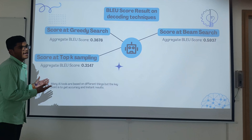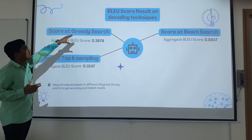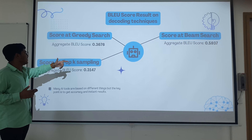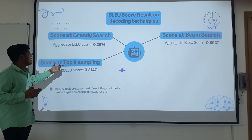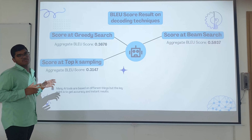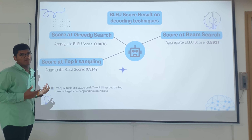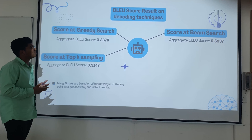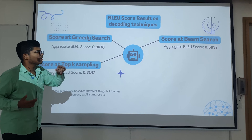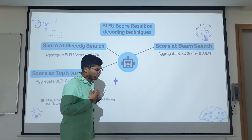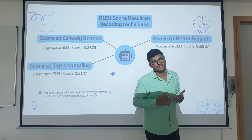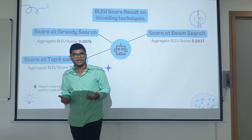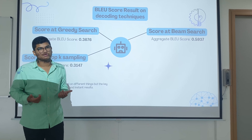Here are my research results. I compared the three decoding techniques — greedy search, beam search, and top-k sampling — using the BLEU score metric on my machine learning model. The highest BLEU score was achieved with beam search. Based on my study and observation, beam search gives the best output on the dataset I used.